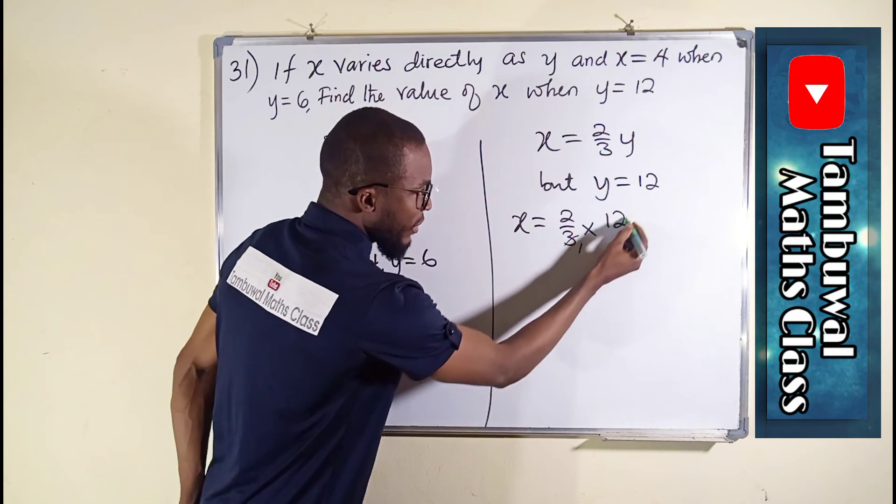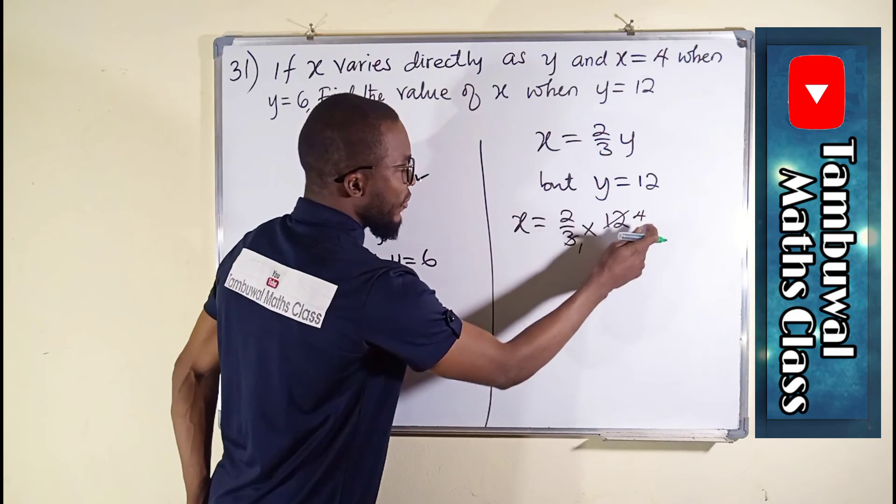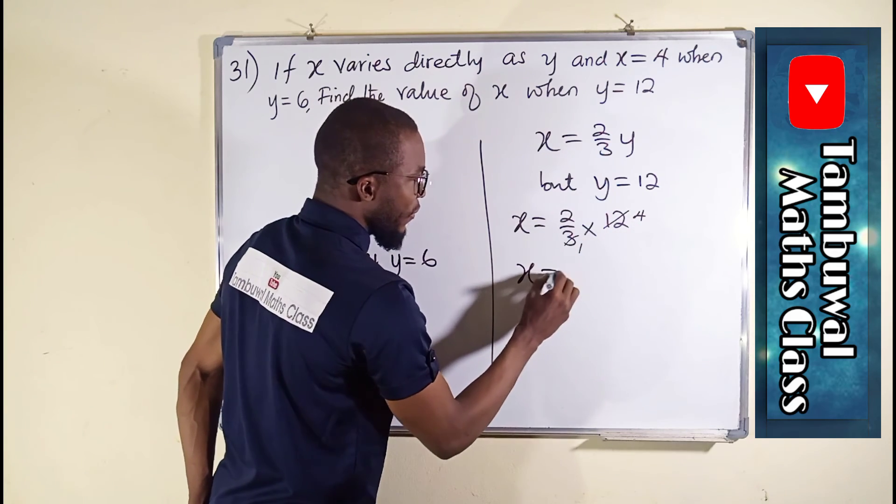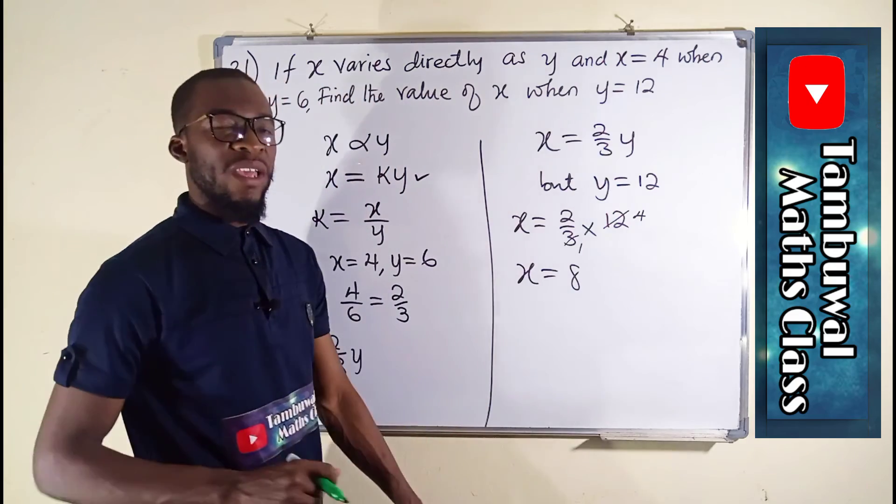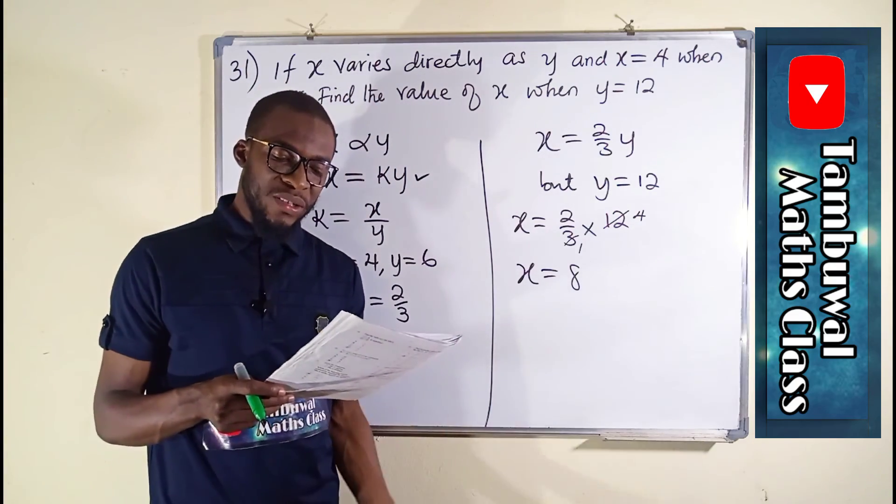3 goes into 3 one time and 3 goes into 12 four times. 2 times 4 is 8, and therefore the corresponding value of x equals 8, which is option C.